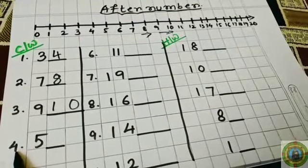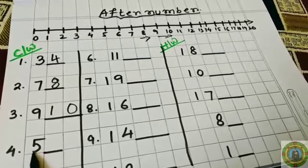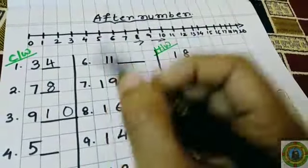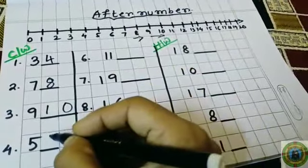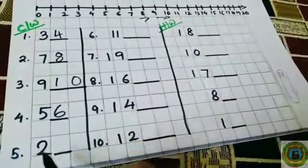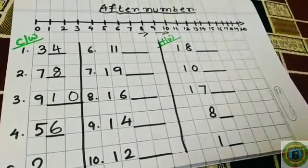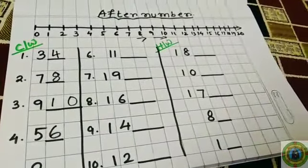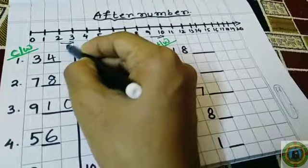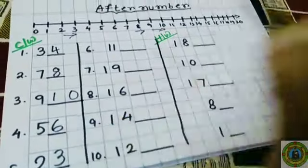Question number 4: What comes after 5? The answer is 6. Question number 5: What comes after 2? The answer is 3. So we have to write 3.